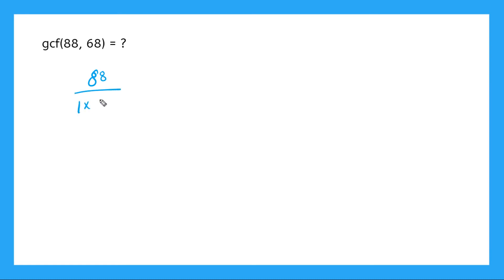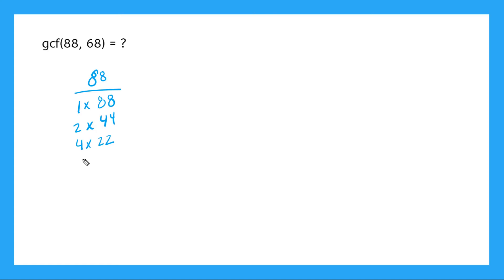So of course we have 1 times 88, and we have 2 times 44. Not 3, but 4 — 4 times 22. Does 5 go into 88? No. Does 6? No. 8 does — 8 times 11. 9? No. 10? No. I'm going to call this list good for now for 88 and now let's do the same thing for 68.